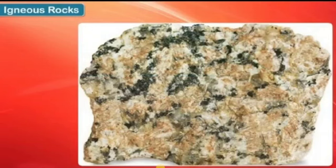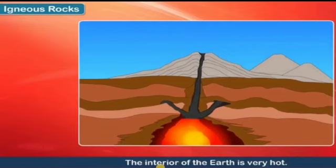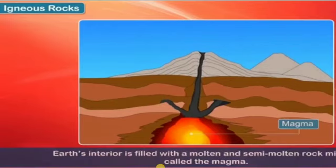Igneous rocks. The interior of the Earth is very hot. Earth's interior is filled with a molten and semi-molten mixture called magma — that means rock which is fully melted or partially melted.